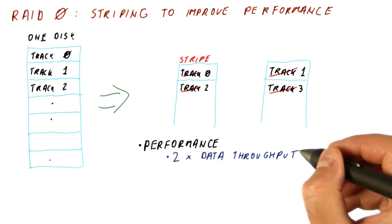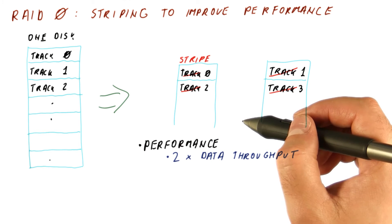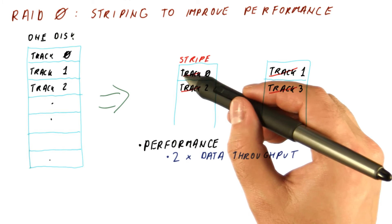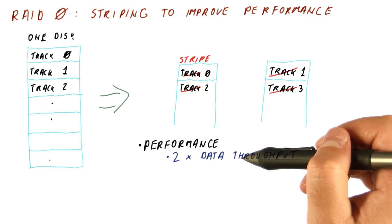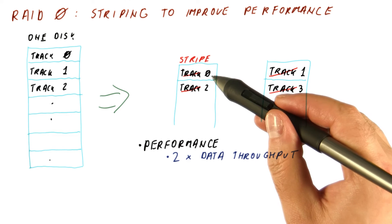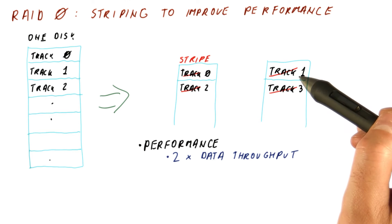As far as performance is concerned, we get twice the data throughput if we have two disks. Why? Because while the first disk is reading some data, the second could be reading data too. And because controllers and buses today are faster than what the disk can deliver, effectively we can transfer twice the amount of data.